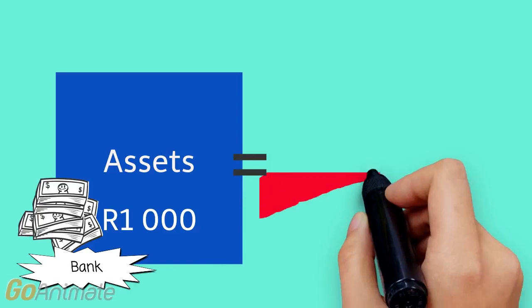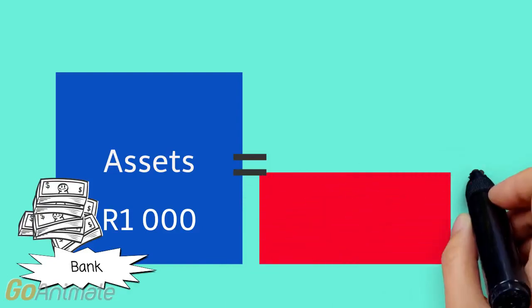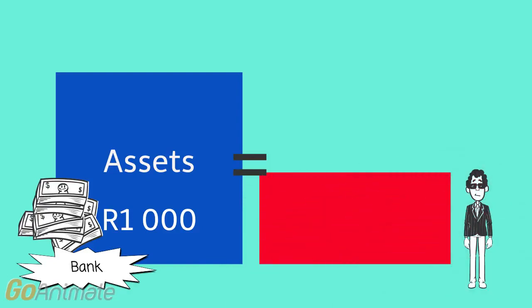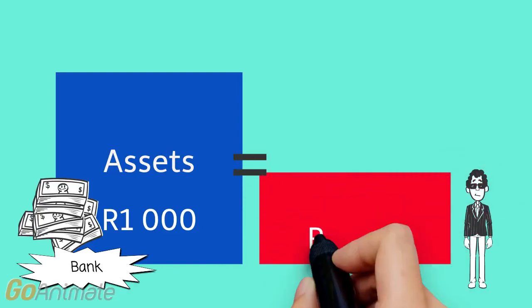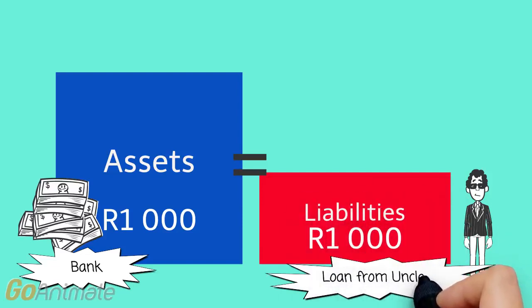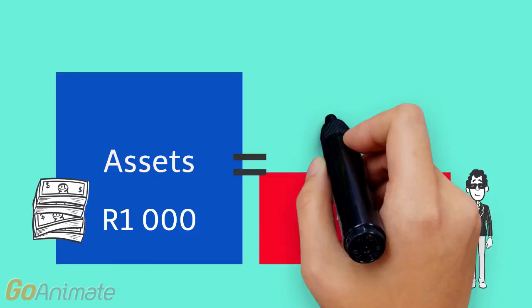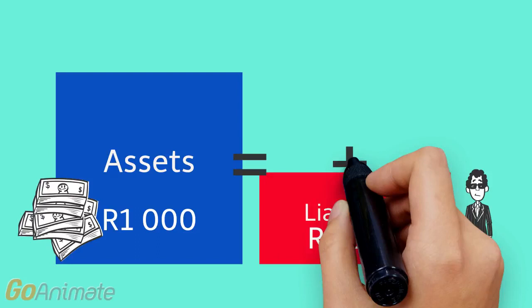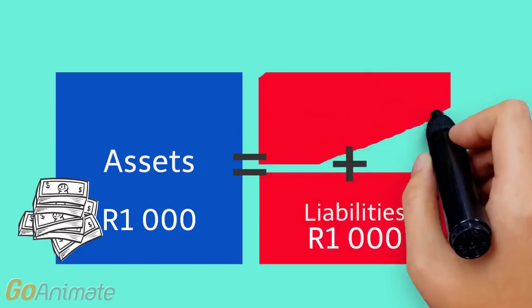Nandi got the money from Uncle Bob who said she can pay him back in two years' time, so the 1,000 rand is a liability. We call the liability 'loan from Uncle Bob.' So her assets are 1,000 and her liabilities are 1,000. And in this case the equity is zero.